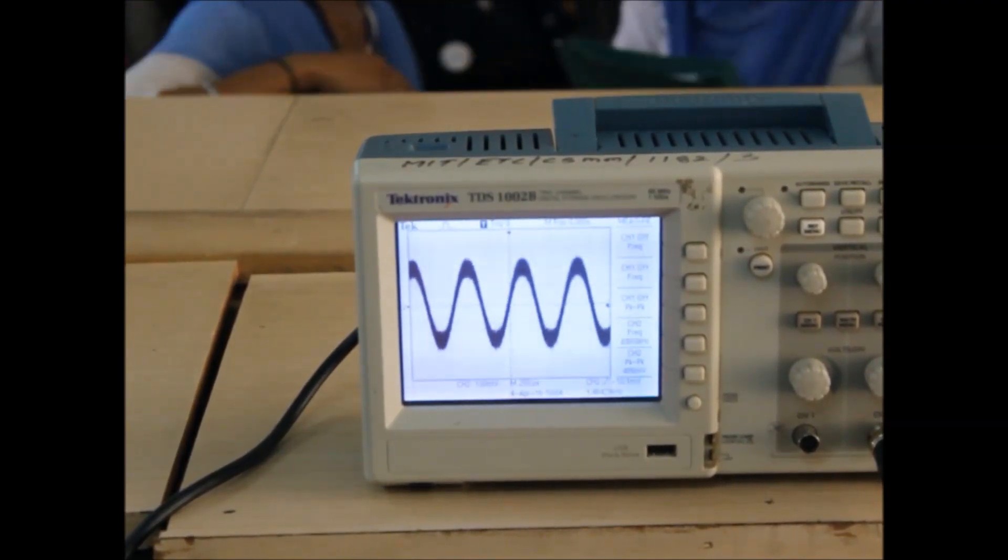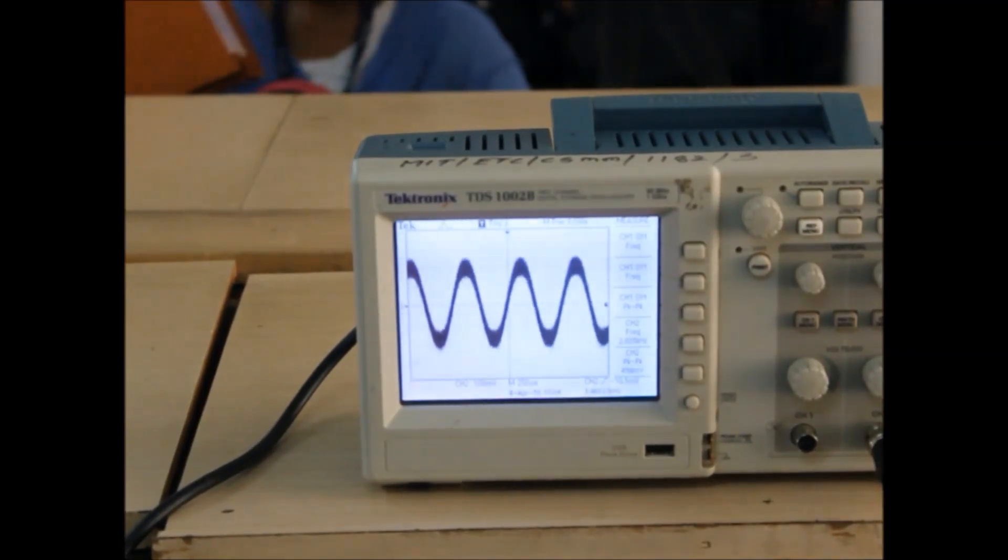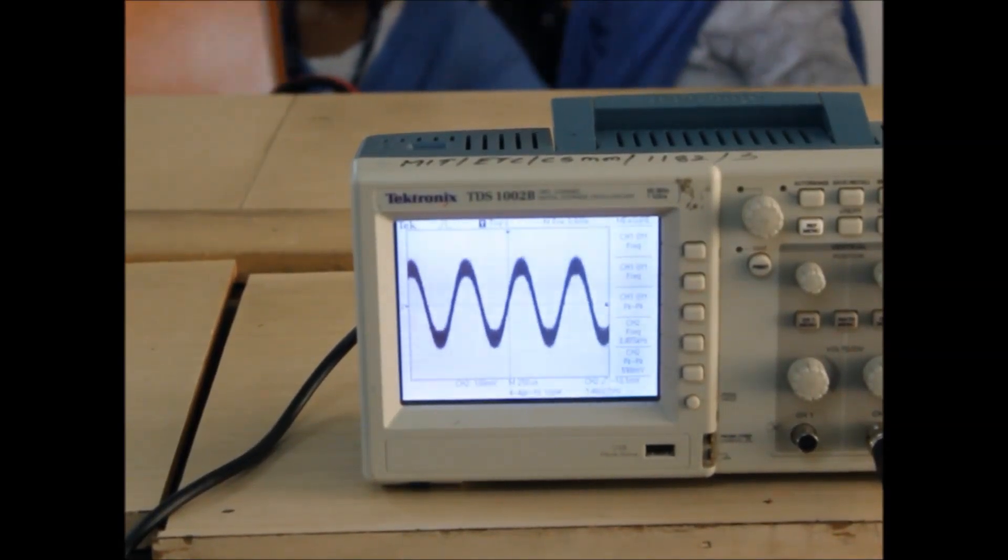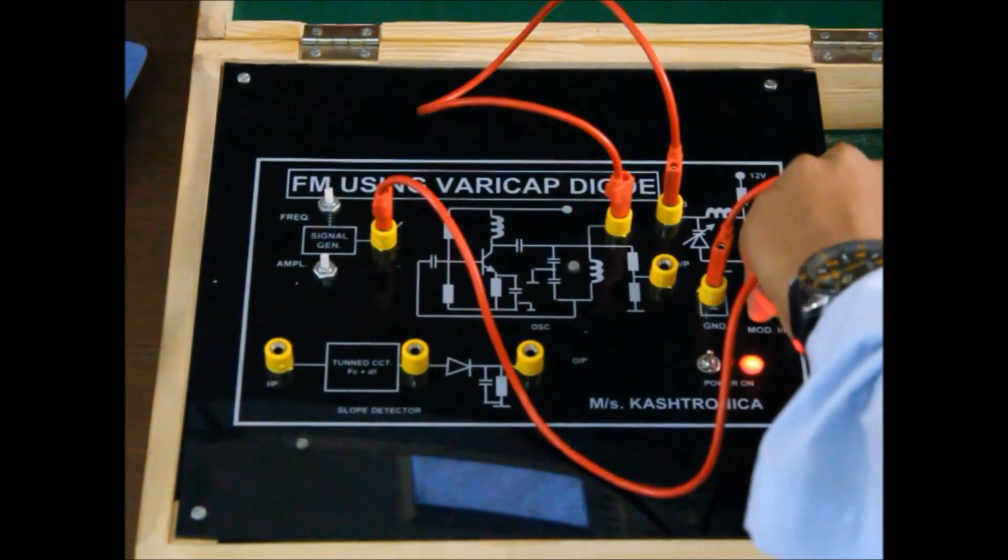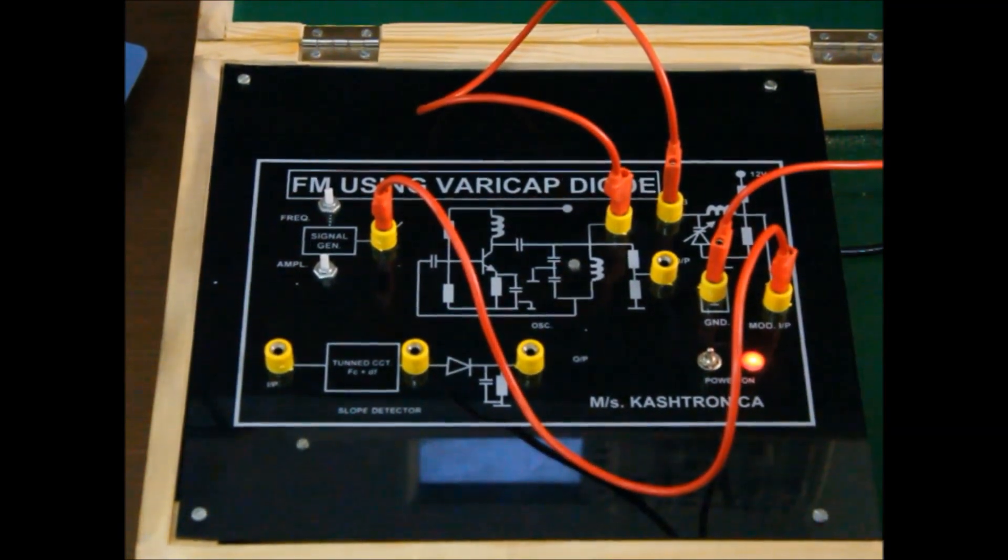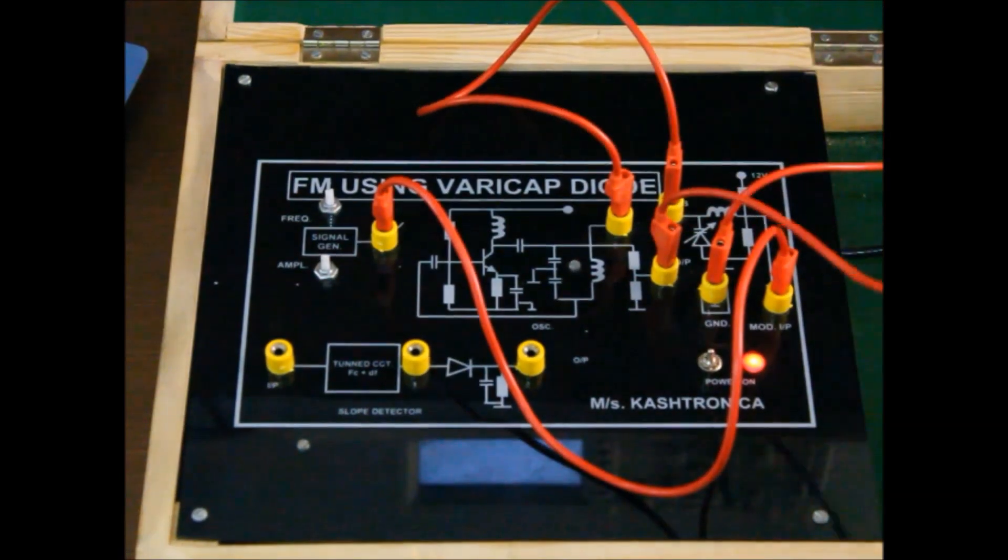Once your modulating signal is set, you give the input to the modulating input of the LC tank circuit and observe the FM output.